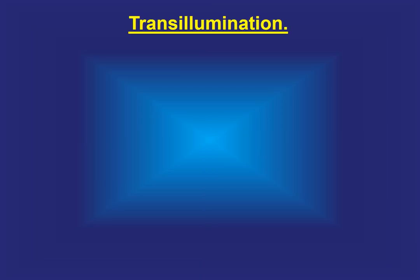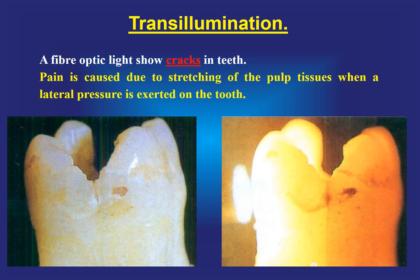Transillumination: a fibre optic light shows cracks in the teeth. We place the fibre optic light on one side and see the crack propagating towards the apical region. Pain is caused due to stretching of the pulpal tissue when lateral pressure is exerted on the tooth.